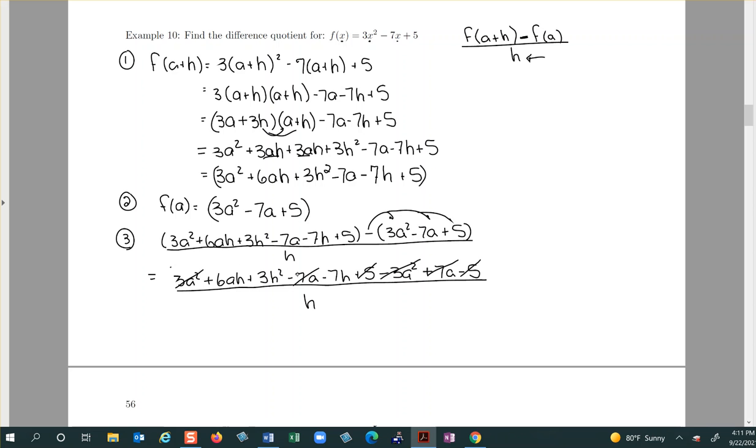So what you're left with are terms that have h's in them: six a h plus three h squared minus seven h divided by h. Because they all have h's in common, you can factor out the h.